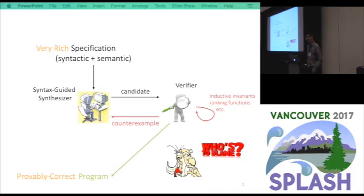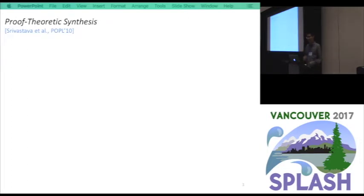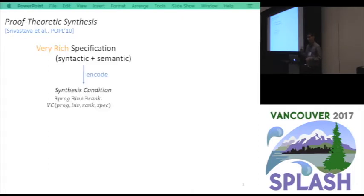A known approach is called proof-theoretic synthesis, proposed by Srivastava et al. in the PowerPoint paper. So again, they start from very rich specification and convert the specification to something called synthesis condition. The synthesis condition does three tasks in one take. It asks for a program and some invariants and ranking functions such that the verification condition is correct. So if this logic formula can be solved by some powerful solvers, then we get a provably correct program.